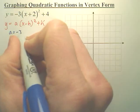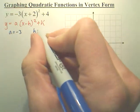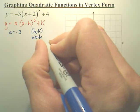a in this particular one is negative 3. And h, k is your vertex.